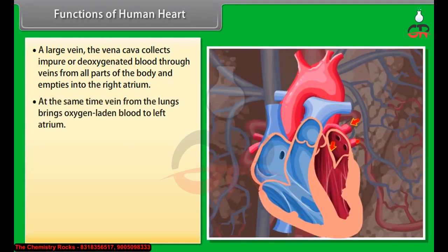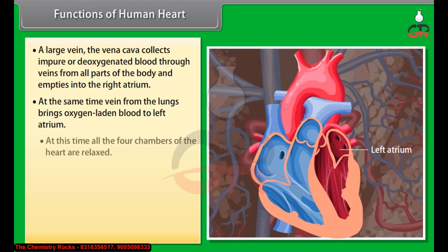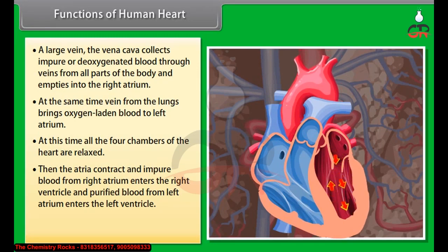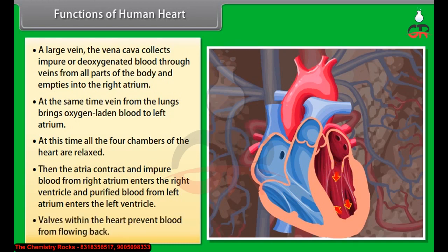At the same time, the vein from the lungs brings oxygen-laden blood to the left atrium. At this time, all four chambers of the heart are relaxed. Then the atria contract: impure blood from the right atrium enters the right ventricle and purified blood from the left atrium enters the left ventricle. Valves within the heart prevent blood from flowing back.